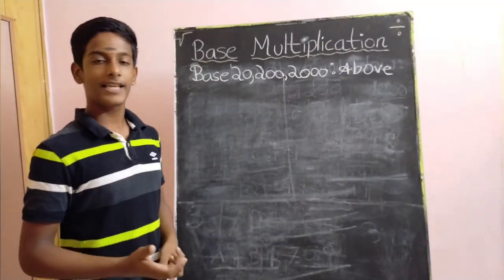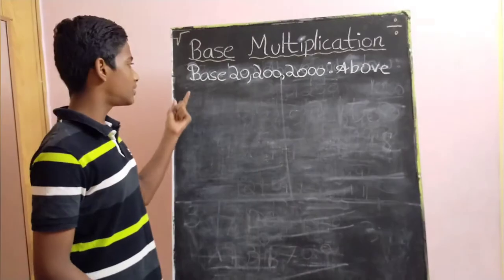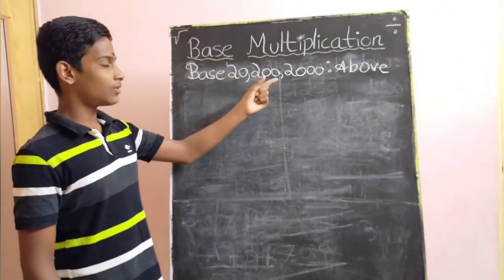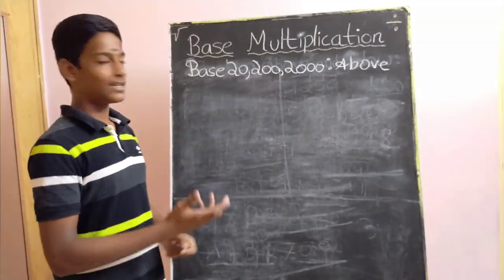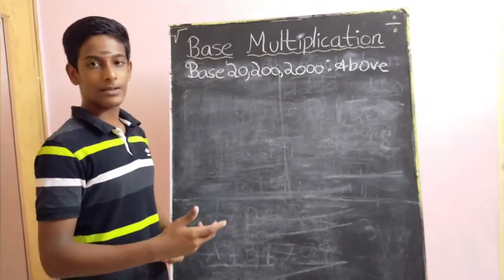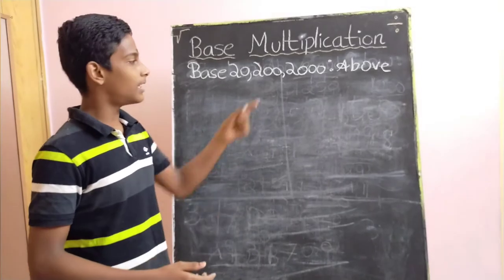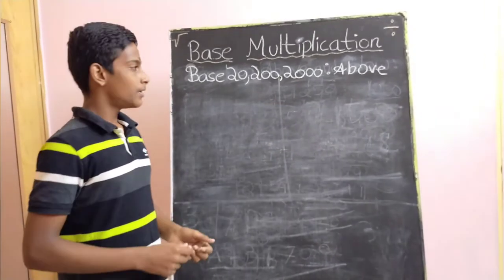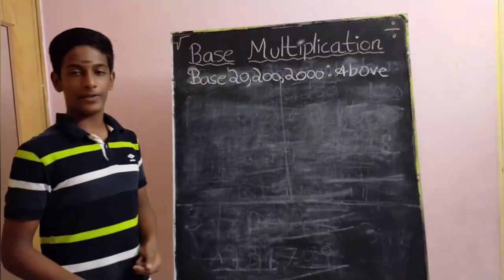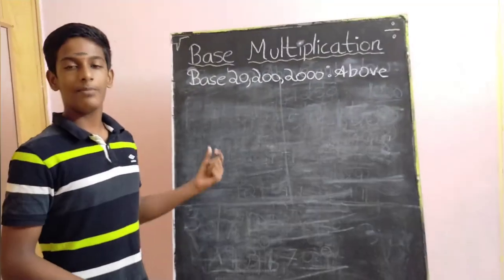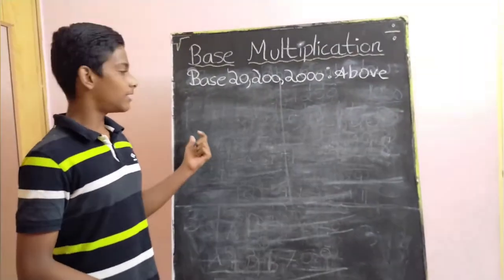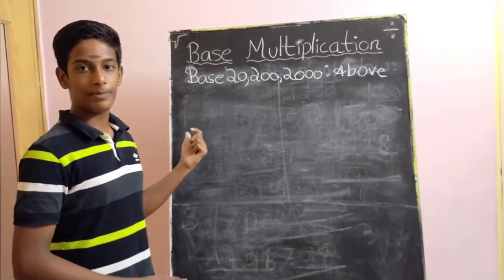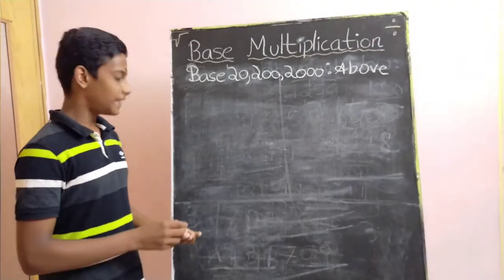In such cases, we use base 20, 200, 2000, or any secondary base number above or below base. So, without any further delay, come let's see the first example of this video.